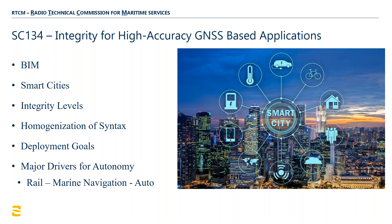Rail is basically one-dimensional — you're on a rail and you go forward or backwards. Marine navigation is two-dimensional and usually not very congested. Then you've got auto, which will be the last of the major autonomy shifts. Obviously air is already there, mostly. But what do these words mean? That's part of the standardization process — what is the difference between 'should' and 'shall'? We've had day-long discussions like that within the standards body.